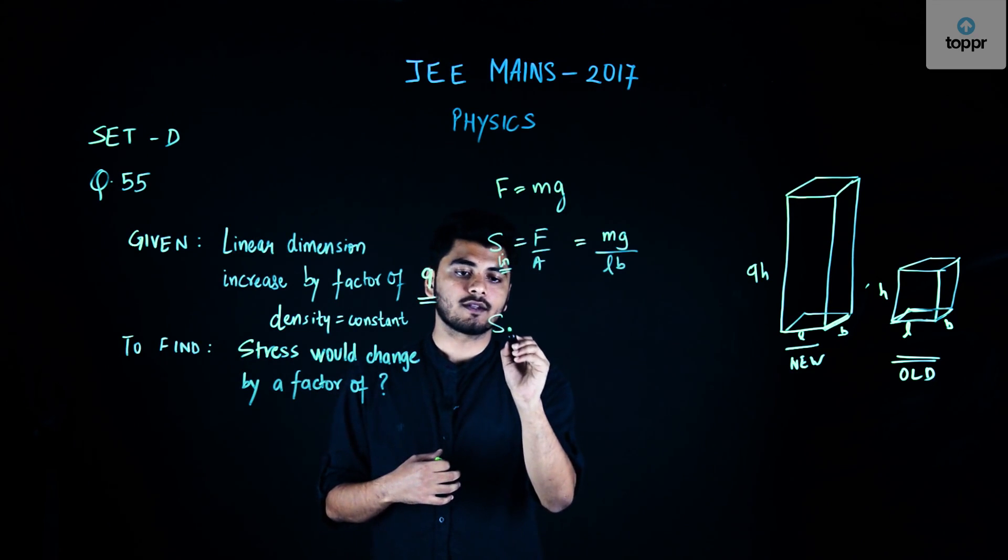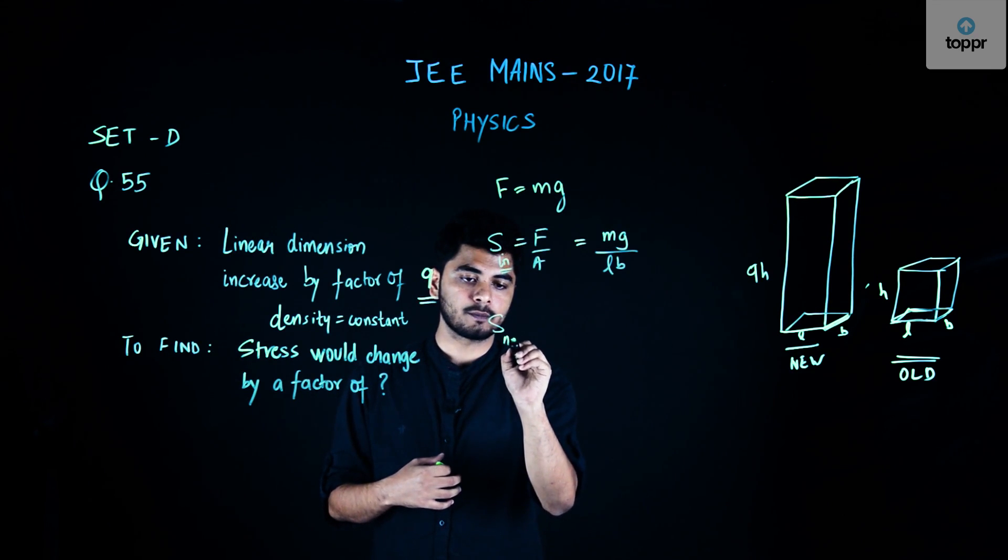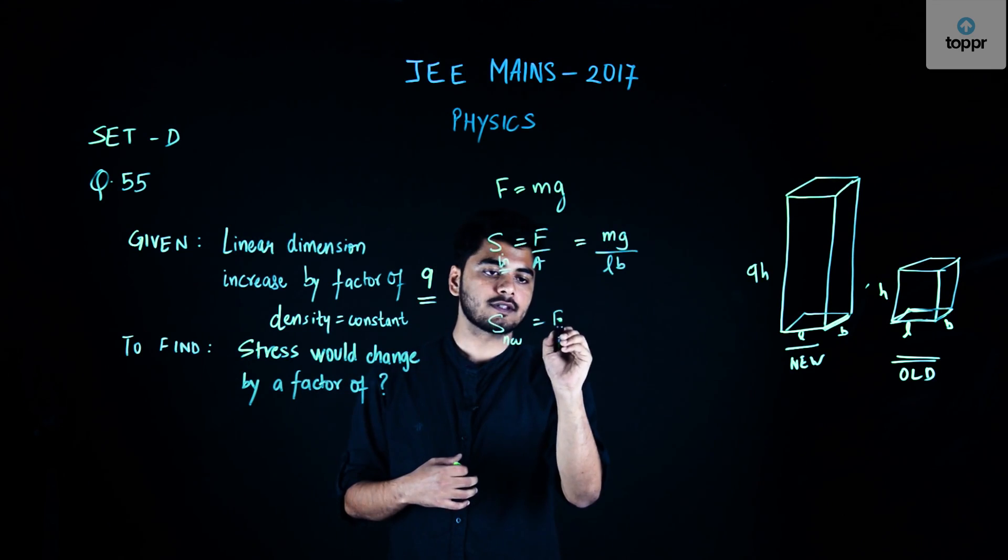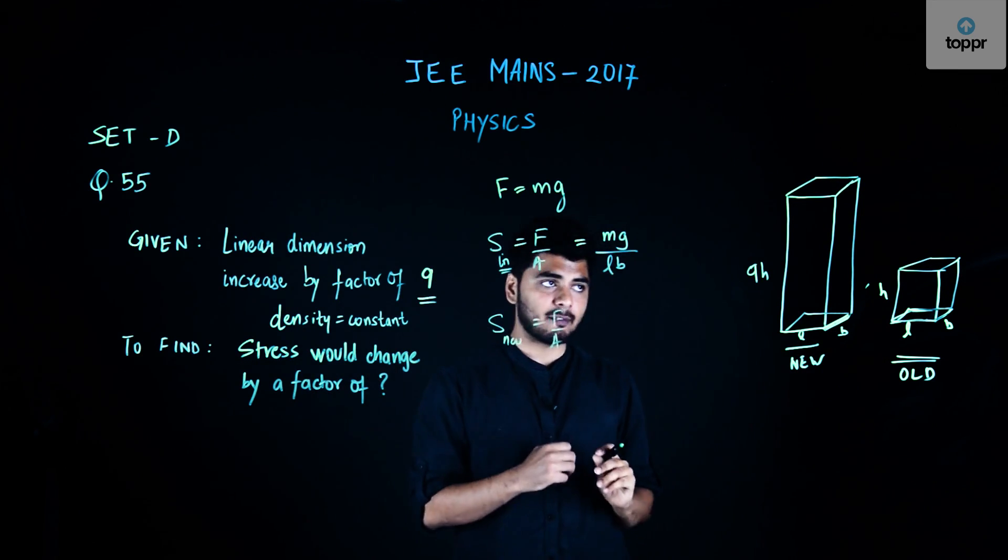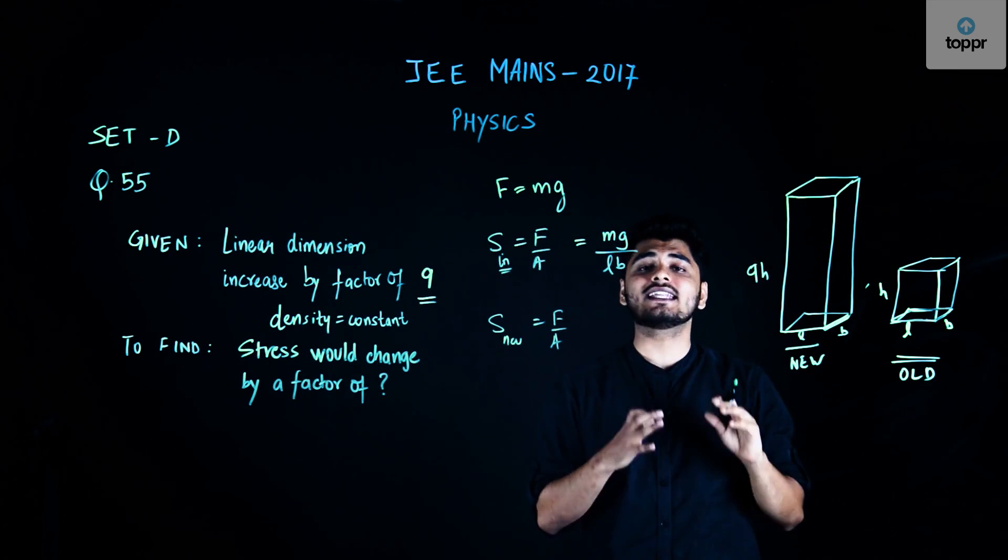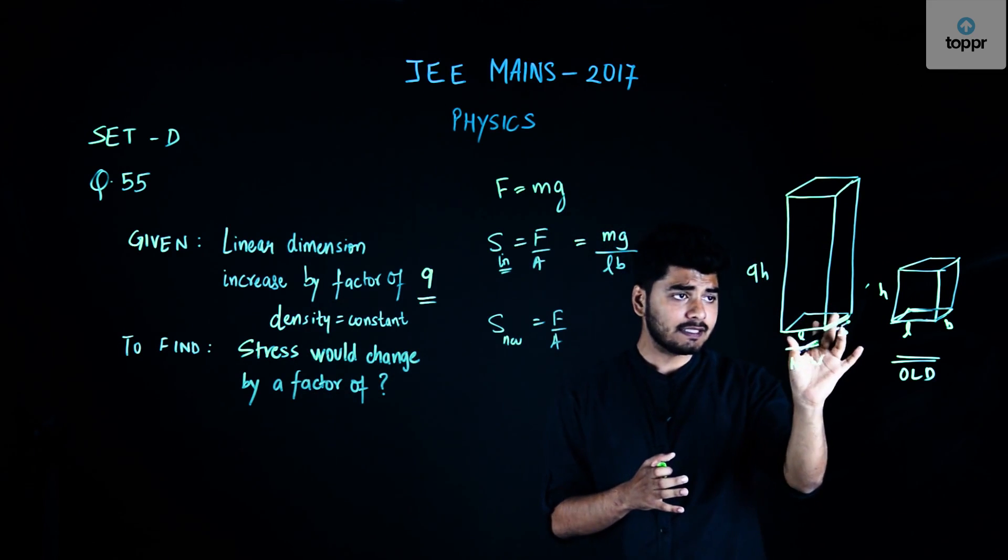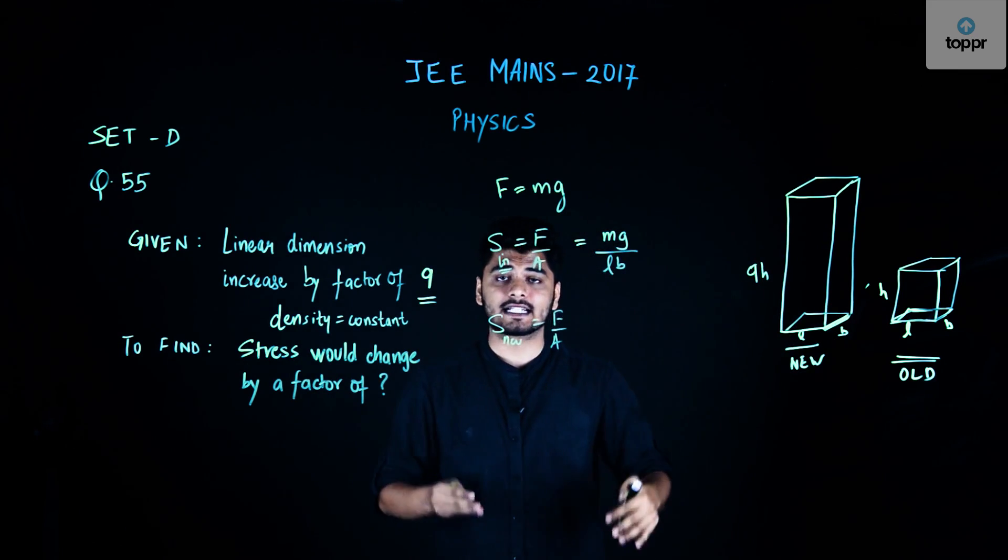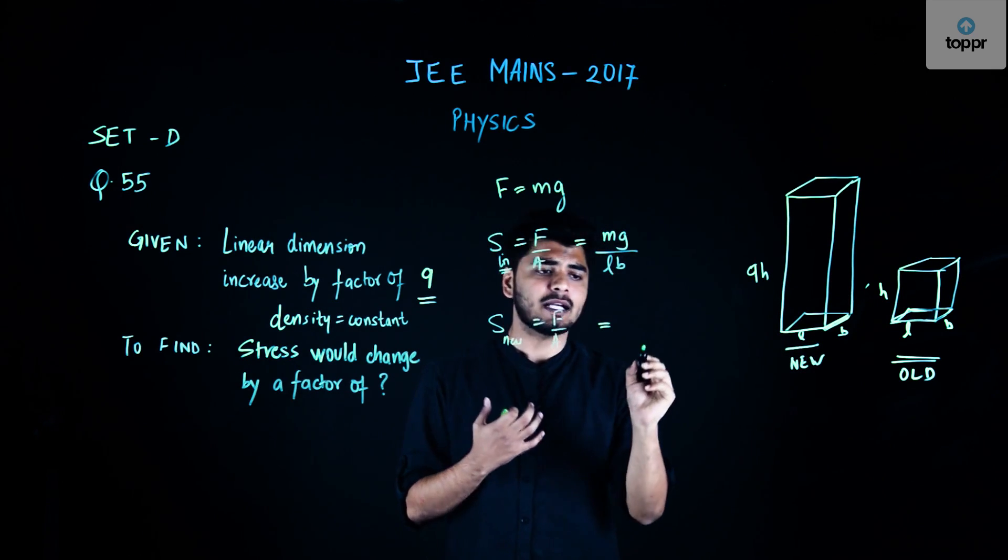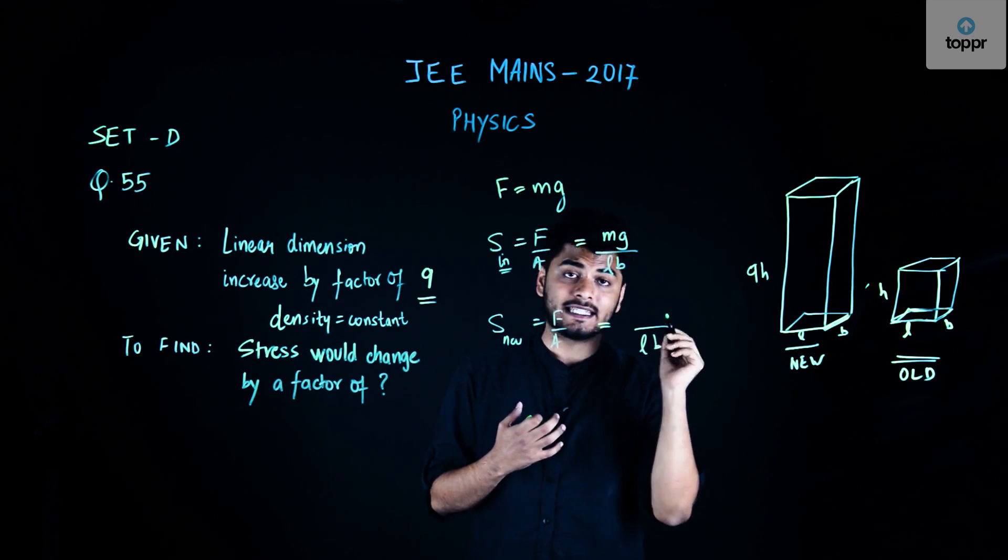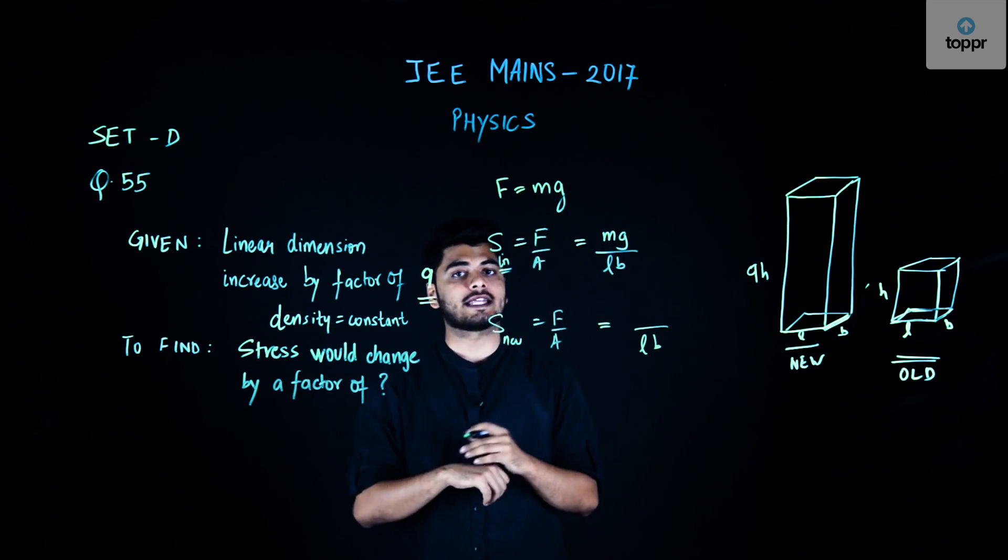Now, stress new would be the new force by new area. Given that only one of my dimensions, the height, increases, the area on which the entire stress is focused remains the same. So the new area equals L × B, which was the initial area. But my force would increase.